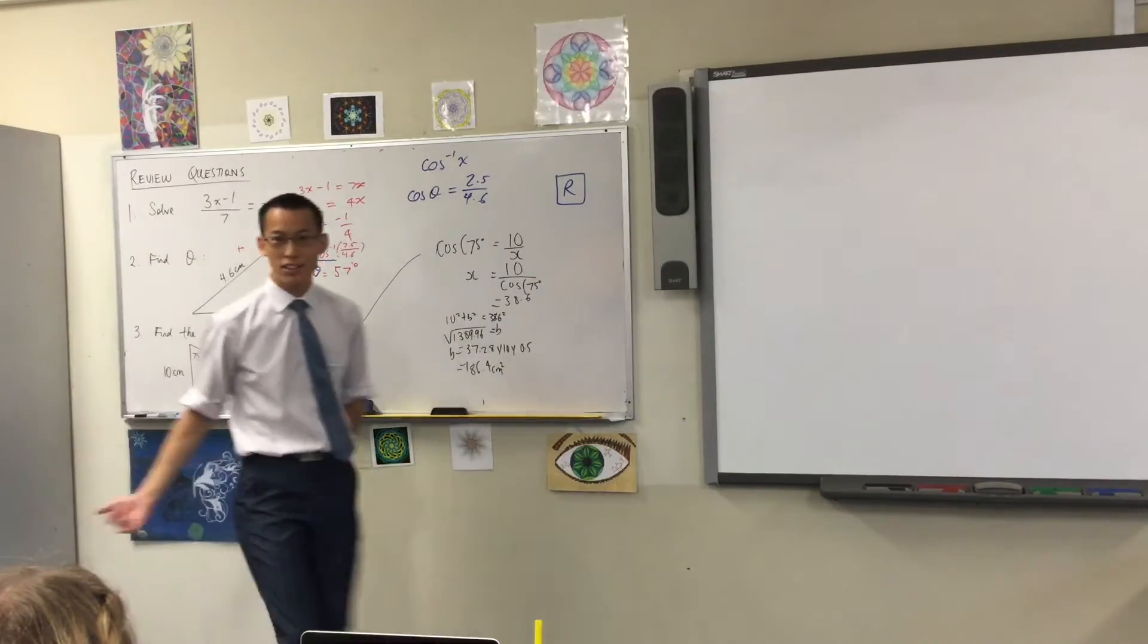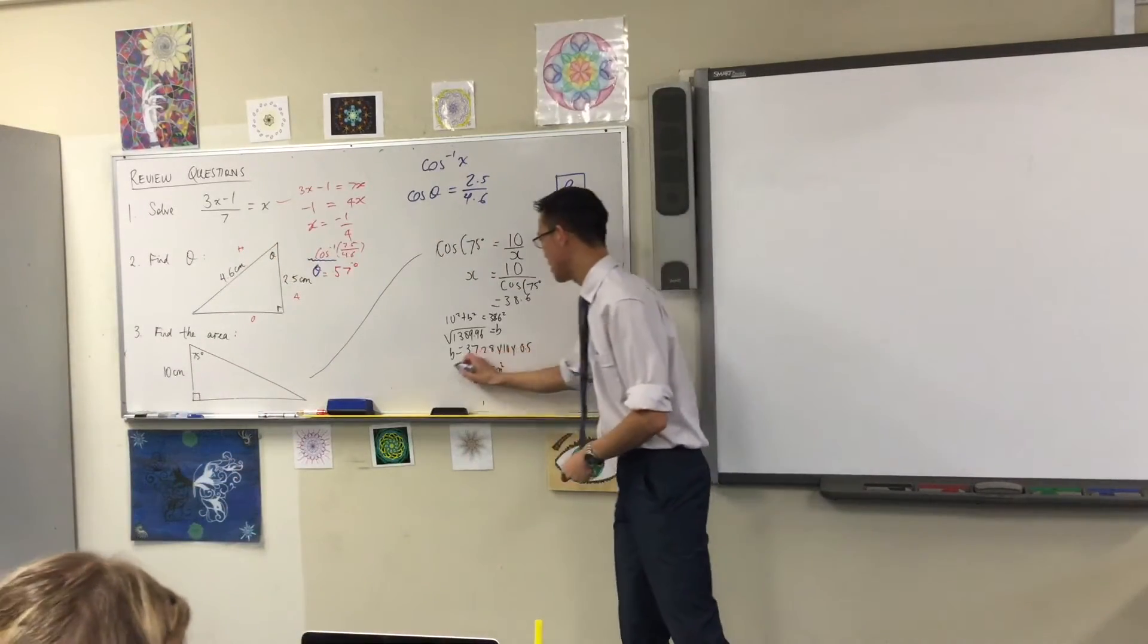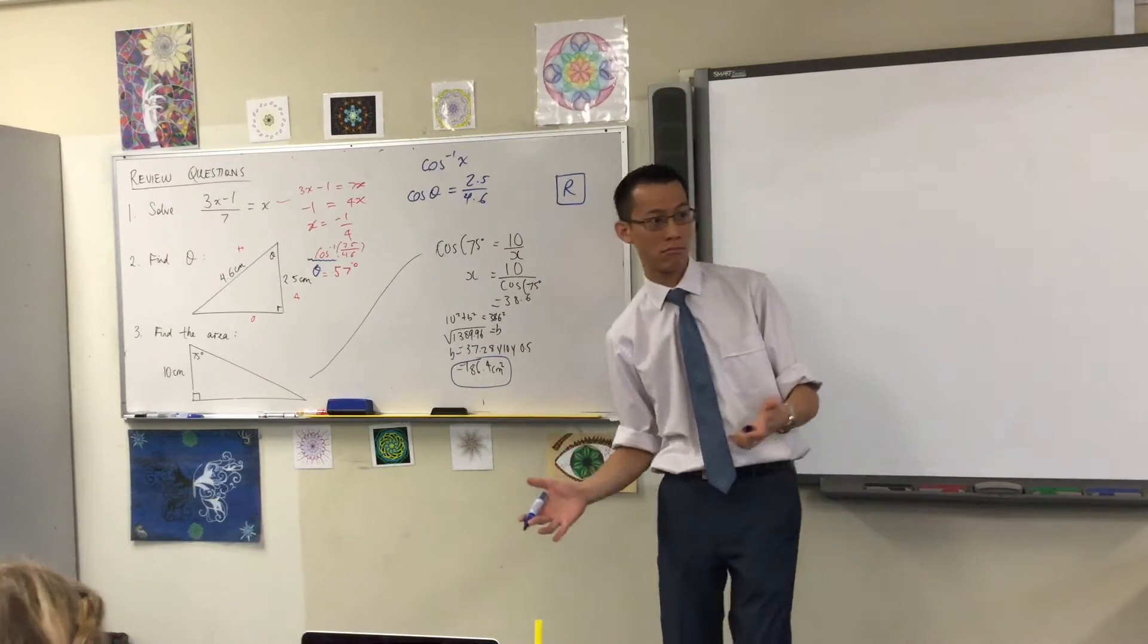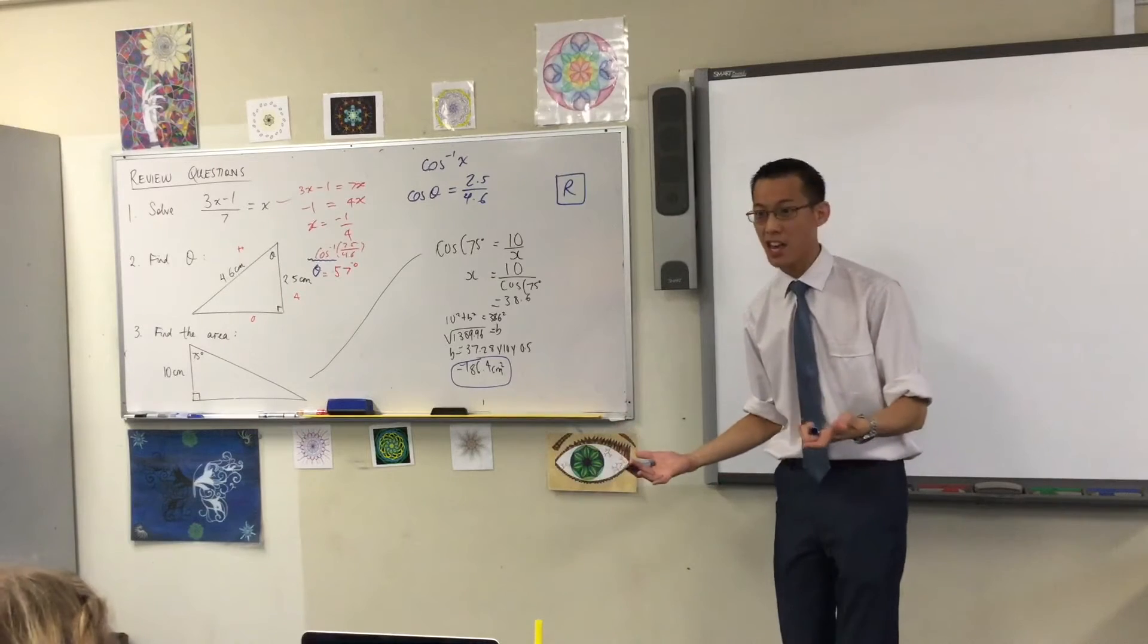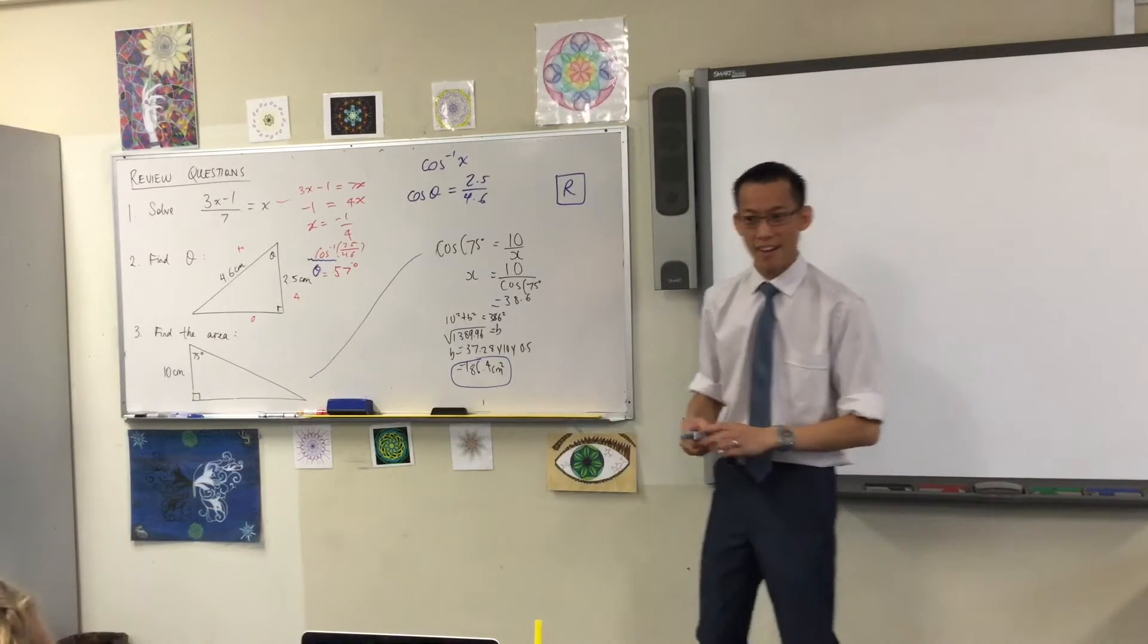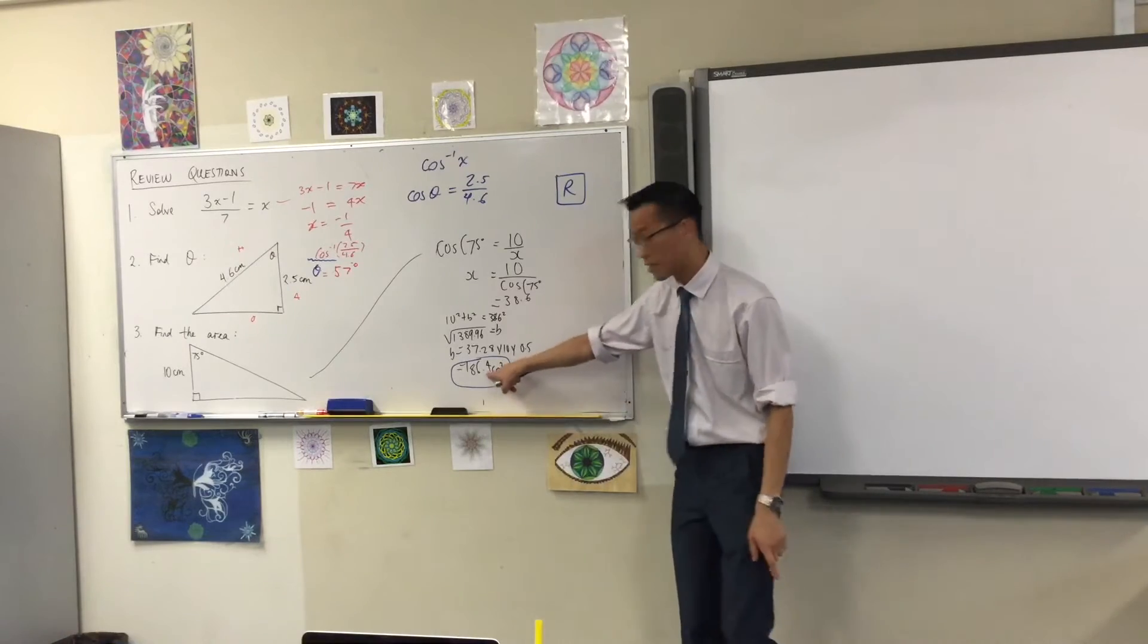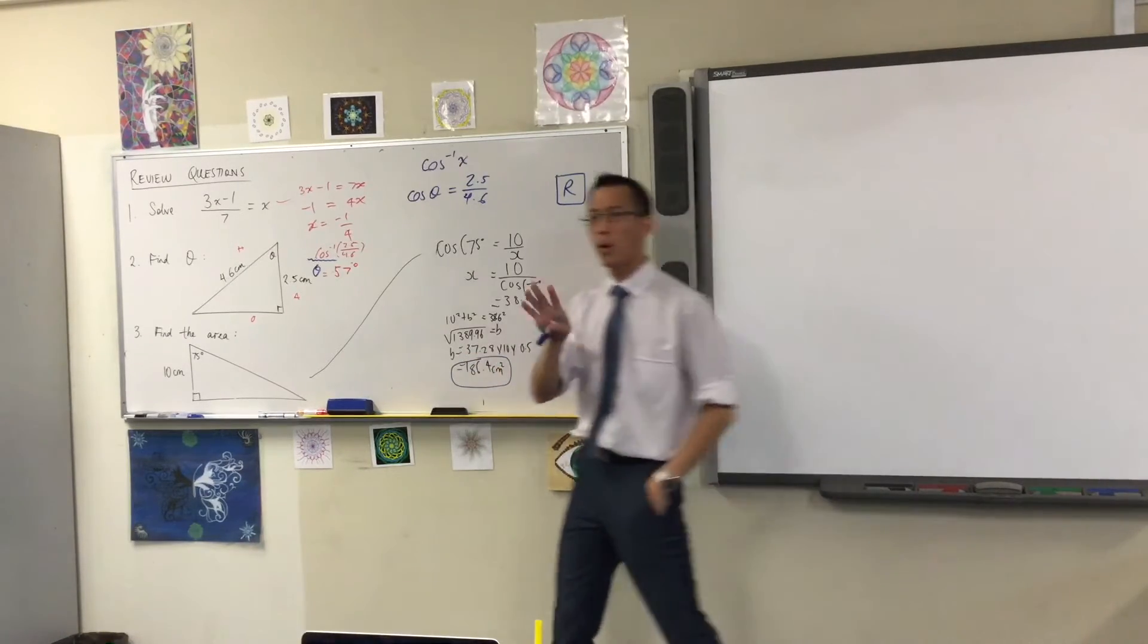Okay. Now, the last one, before we come to the working, 186.4 square centimeters. Looking good? Yeah. Yeah. I got 185. 185? Different, okay, point, sorry, 0.6 here? Okay, great. Now, I'll just pause for a second.